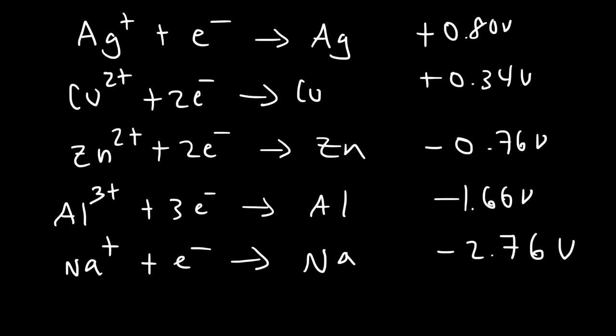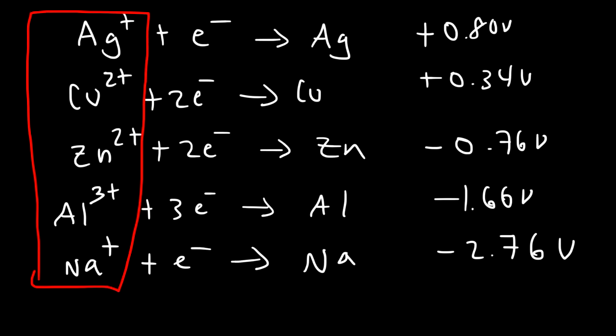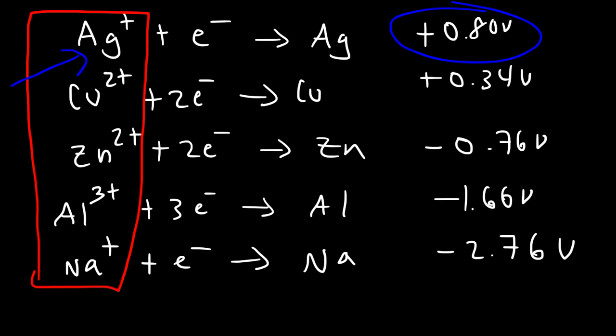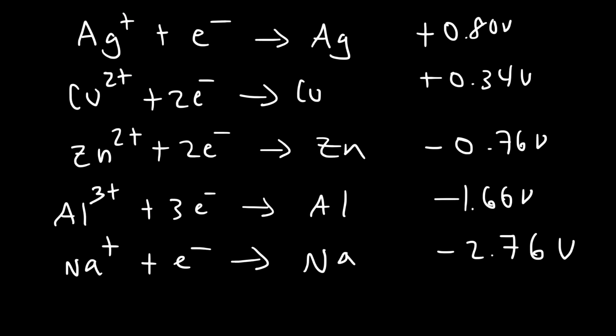Which species is the strongest oxidizing agent? When dealing with oxidizing agents, focus on the species that can acquire electrons — everything on the left side. The strongest oxidizing agent is the one with the most positive cell potential, so Ag⁺ with positive 0.80 volts is the strongest oxidizing agent. The sodium ion, with the most negative cell potential, is the weakest oxidizing agent.